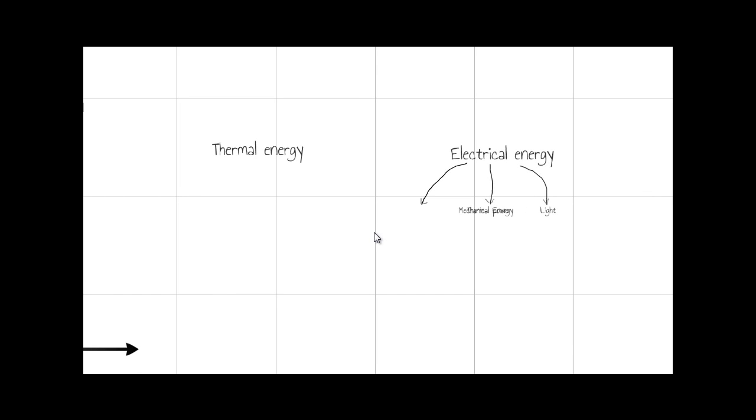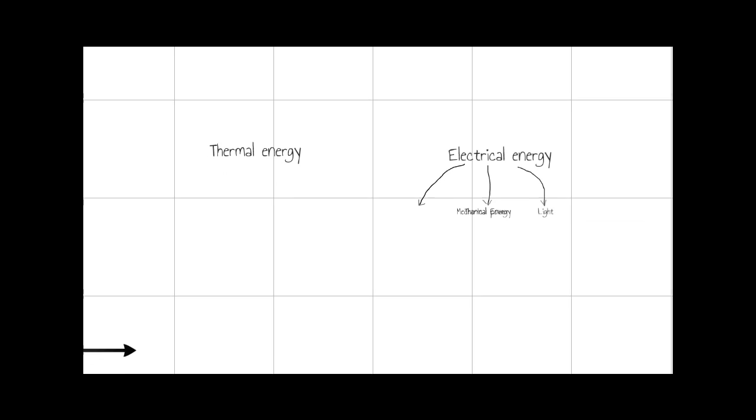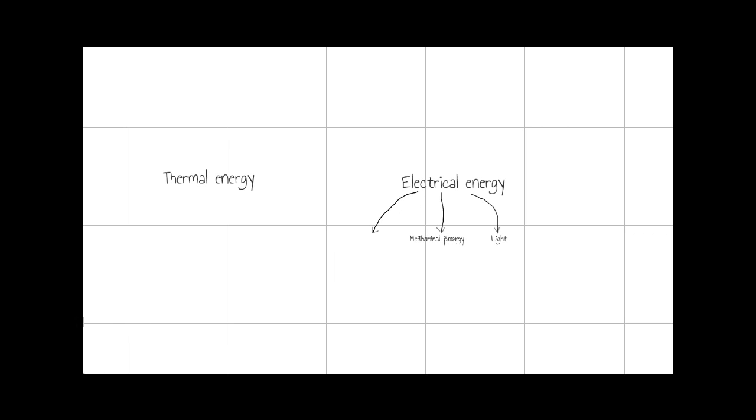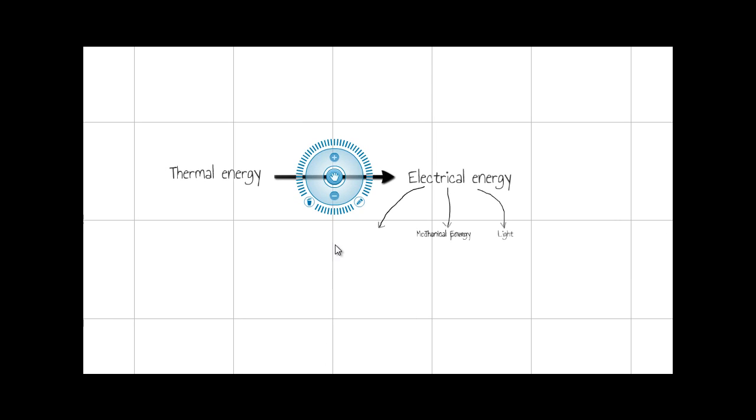So how are we going to generate electricity? In most cases, what we do is we just take them from the national grid. But at the same time, there are situations where we are going to generate our own electricity. In that case, we use generators using fluids. So thermal energy can be used to generate electricity.